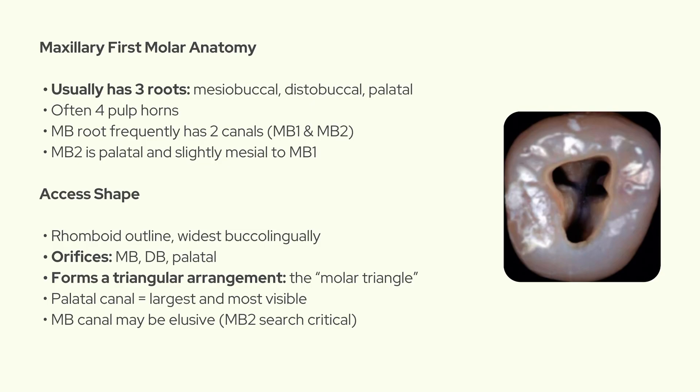The outline of the access cavity is rhomboid shaped and widest in the buccolingual dimension. The three main orifices — mesiobuccal, distobuccal, and palatal — form what's called the molar triangle. The palatal canal is usually the largest and the easiest to locate, while the mesiobuccal can be a bit more elusive, especially if there's an MB2.